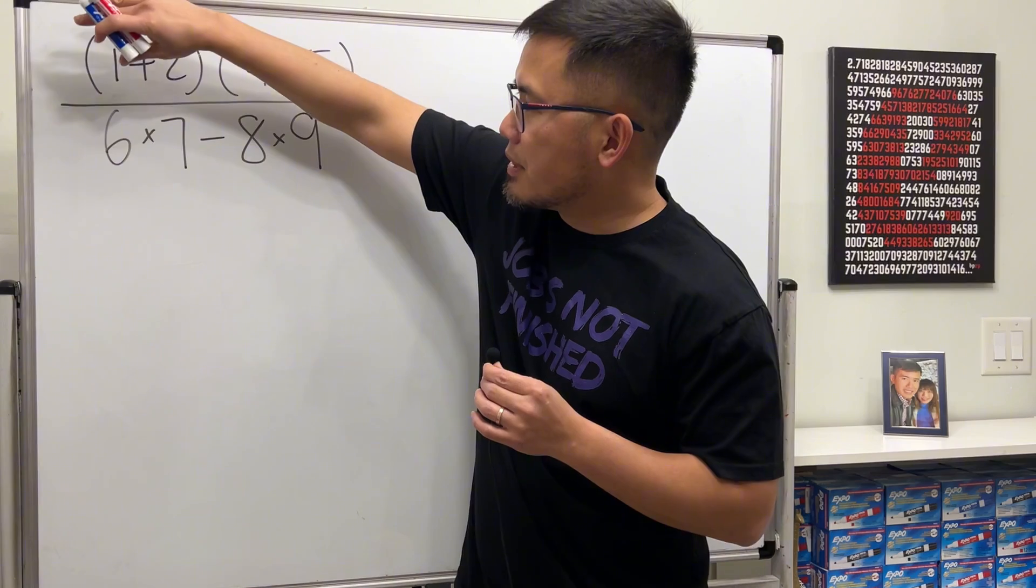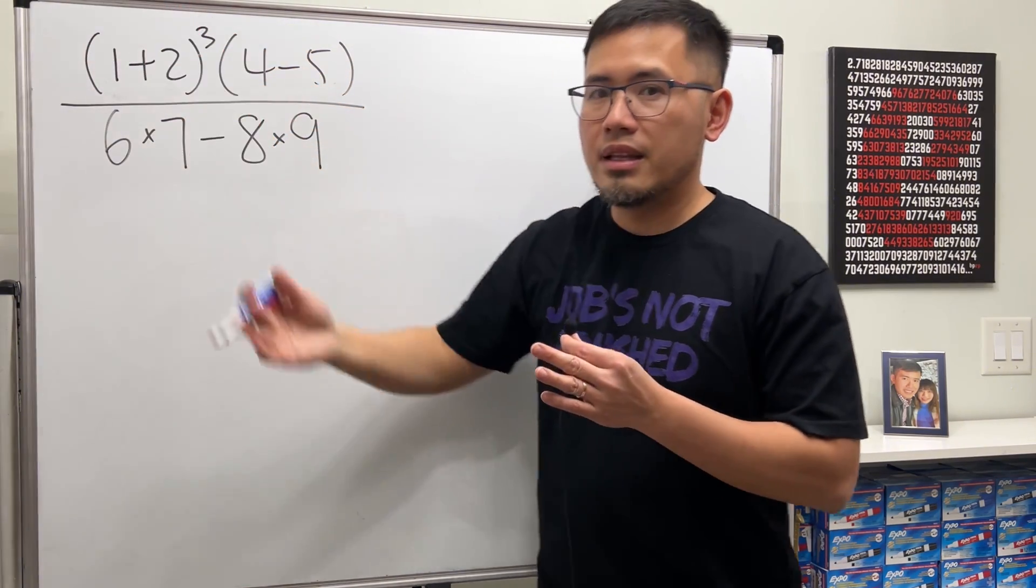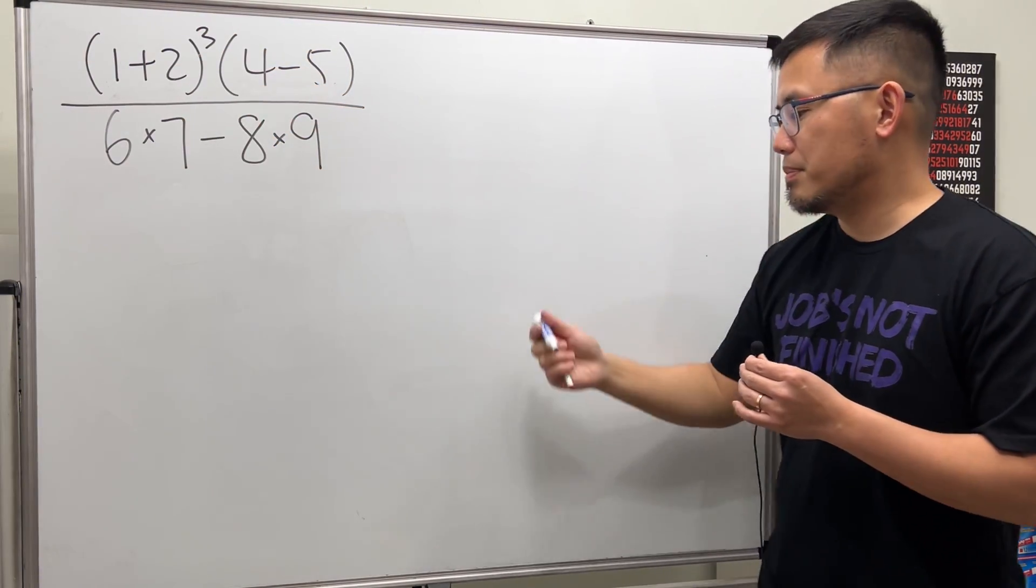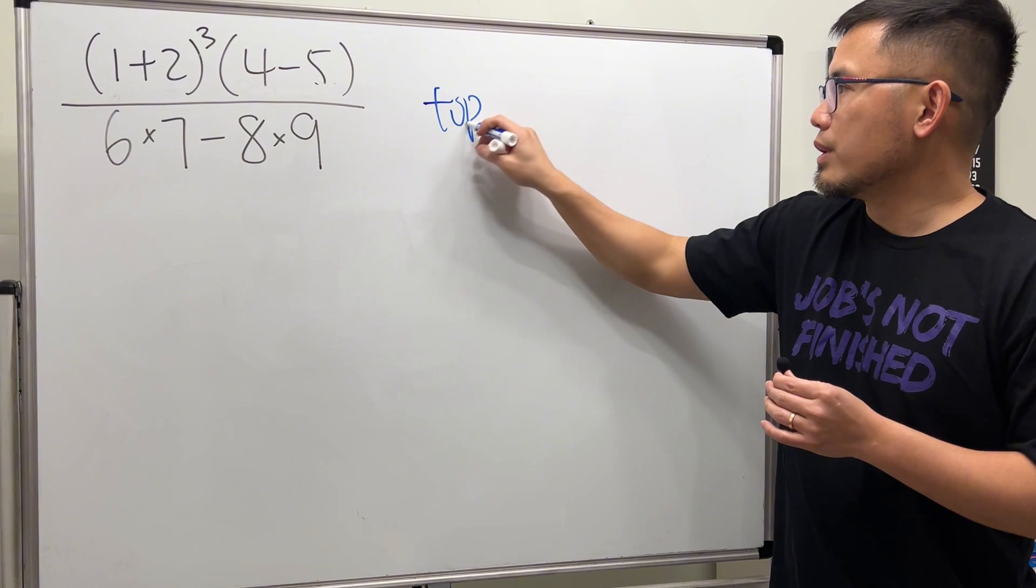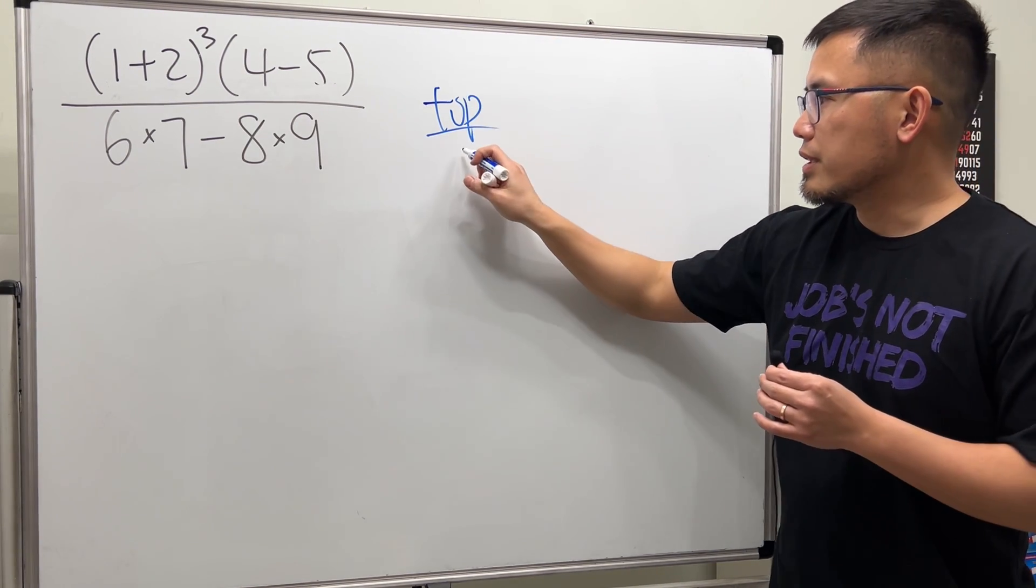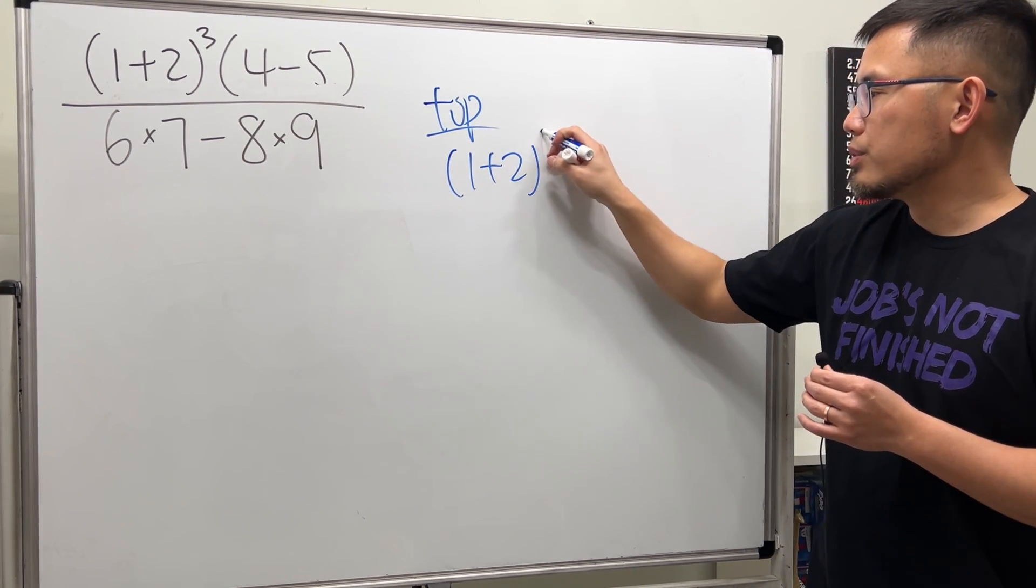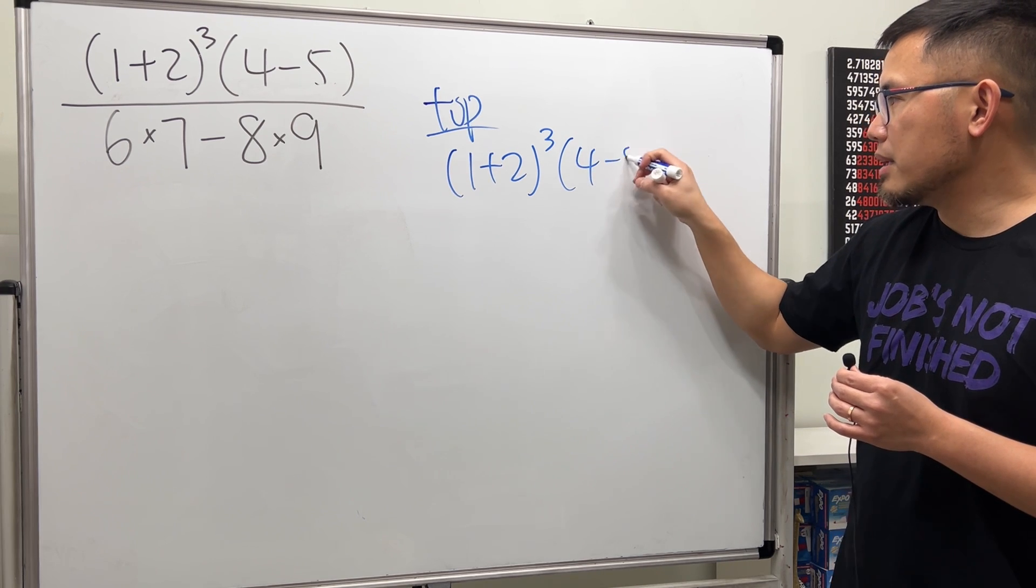Just focus on the top, and then after that work out the bottom, and then at the end we divide. That's the best way. So I will write this down here for you guys. For the top we have (1+2)³ and then (4-5).